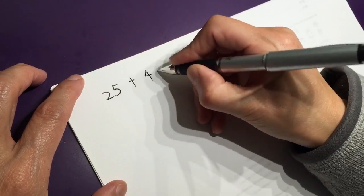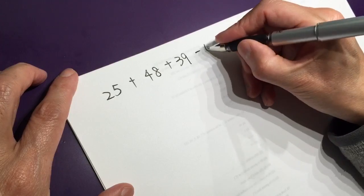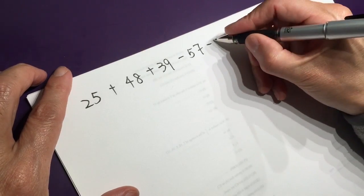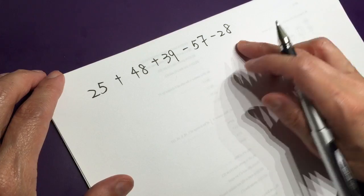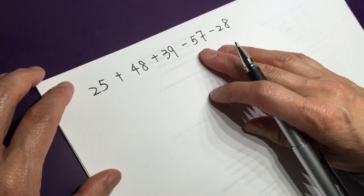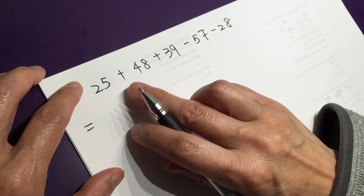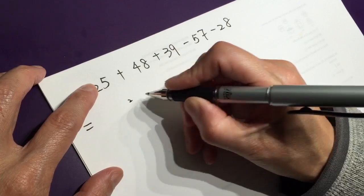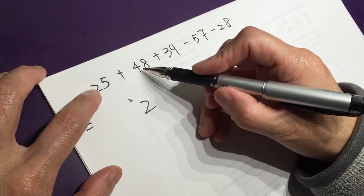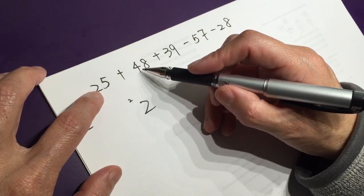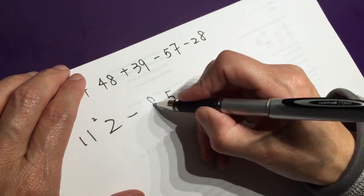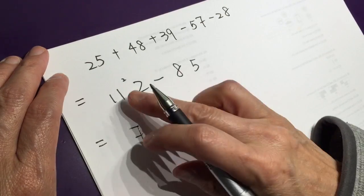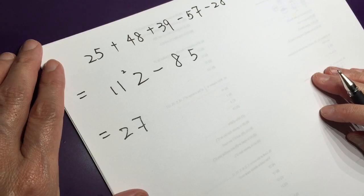What you can do? 25 plus 48 plus 39 minus 57 minus 28. Those numbers do not have relation. If you add each up it will be quite complicated. How about you do this one, you add them all together first. 25, 48, 39 gives 112. And then 57 plus 28 gives 85. So 112 minus 85 equals 27.